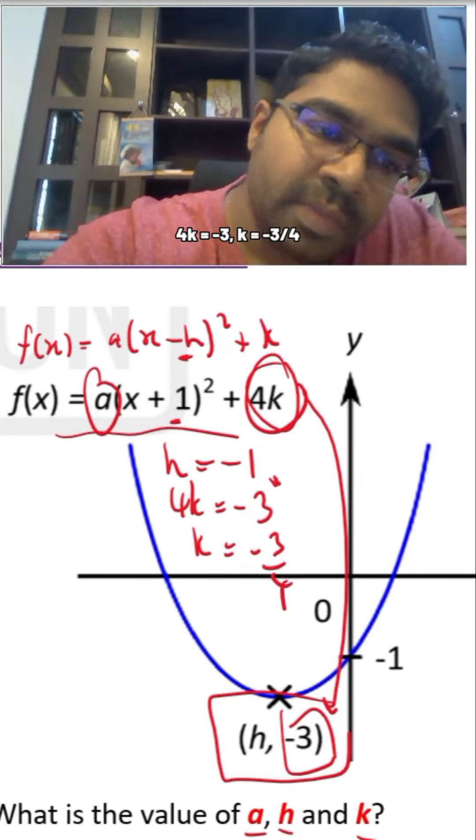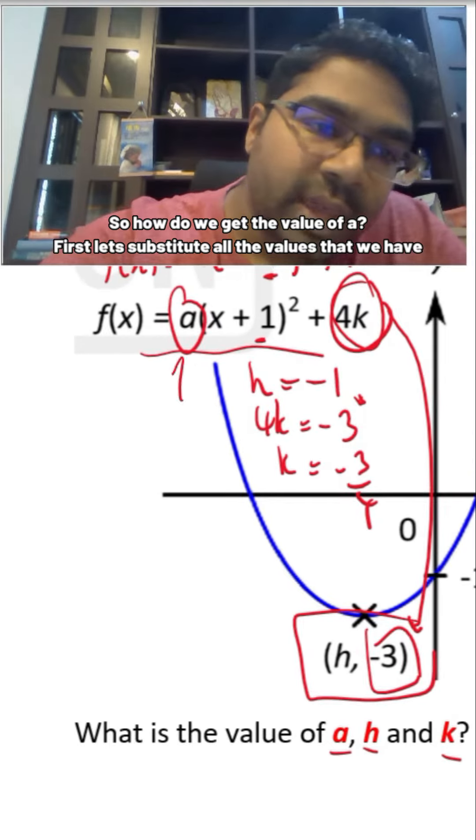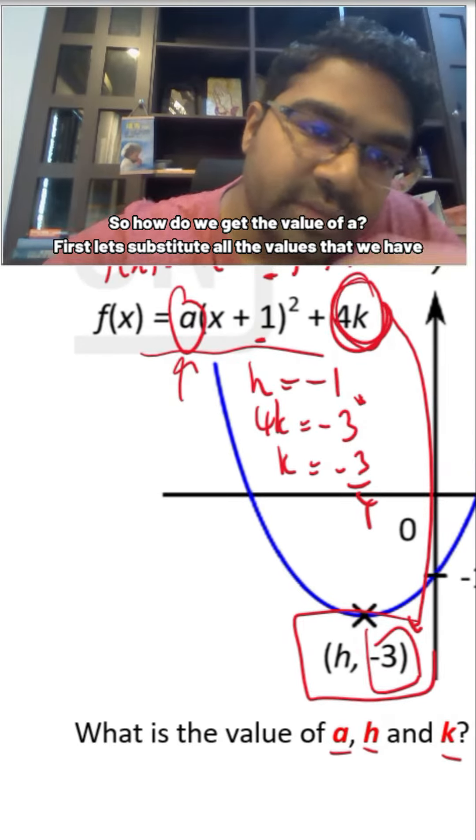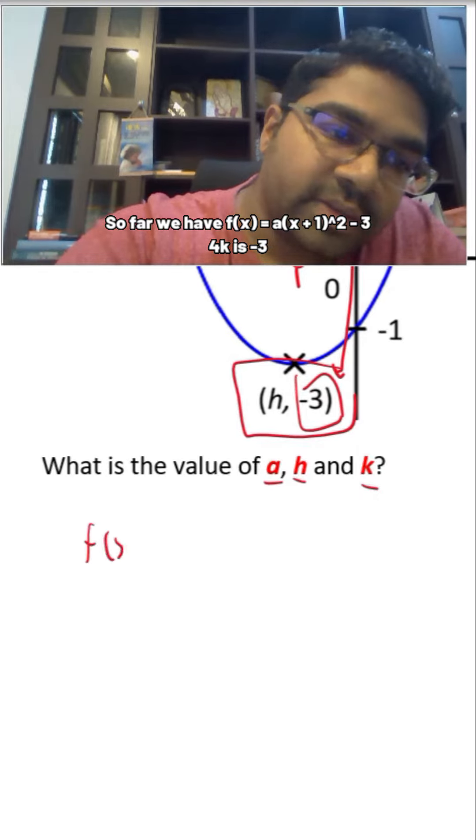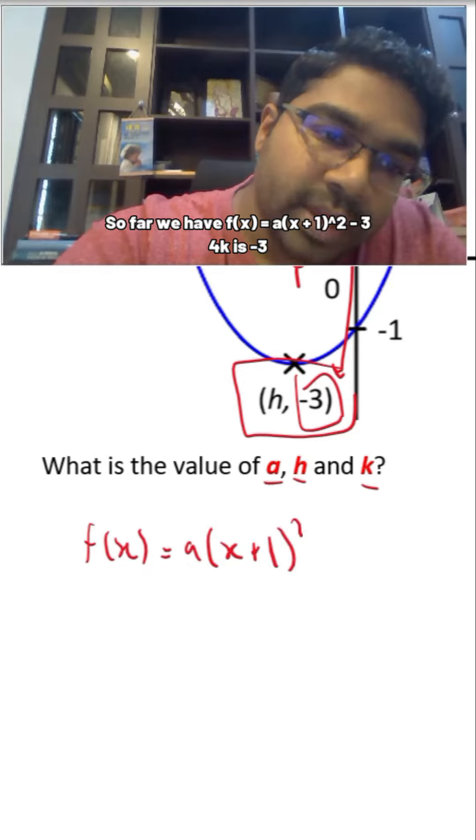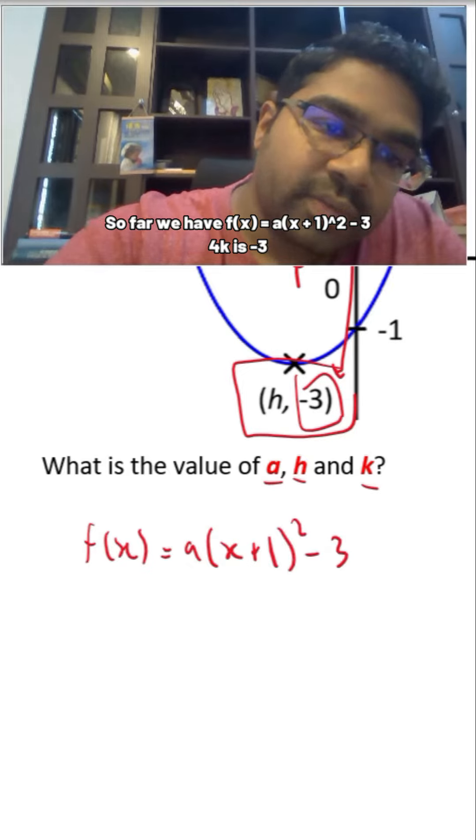3 over 4. So how do we get the value of a? First, let's substitute all the values that we have so far. We have f(x) equals a(x plus 1) squared minus 3. 4k is